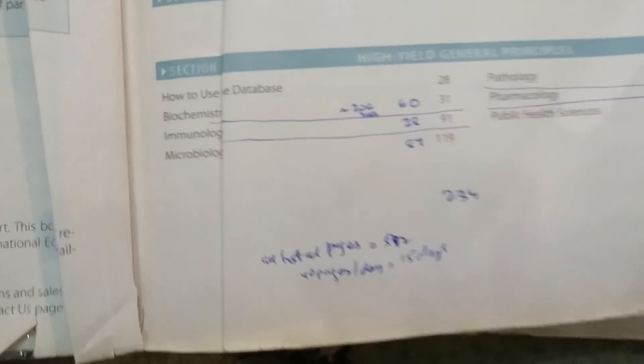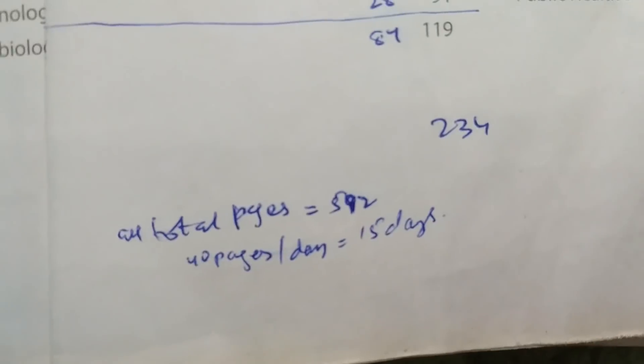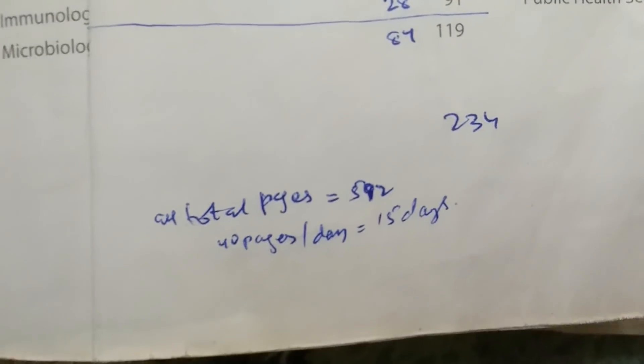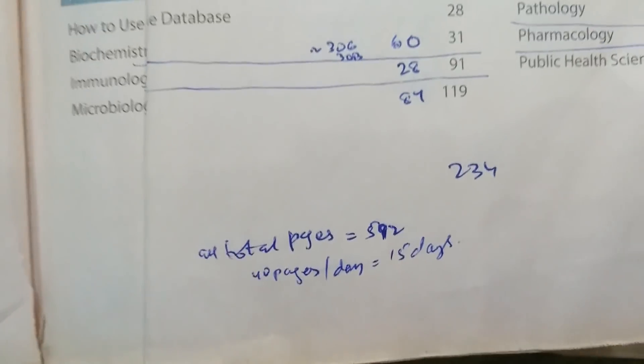For example this was my little unsuccessful plan down here. It said total pages are 592 so 40 pages per day should be around 15 days for the whole book, which is a little over ambitious but nobody's judging.